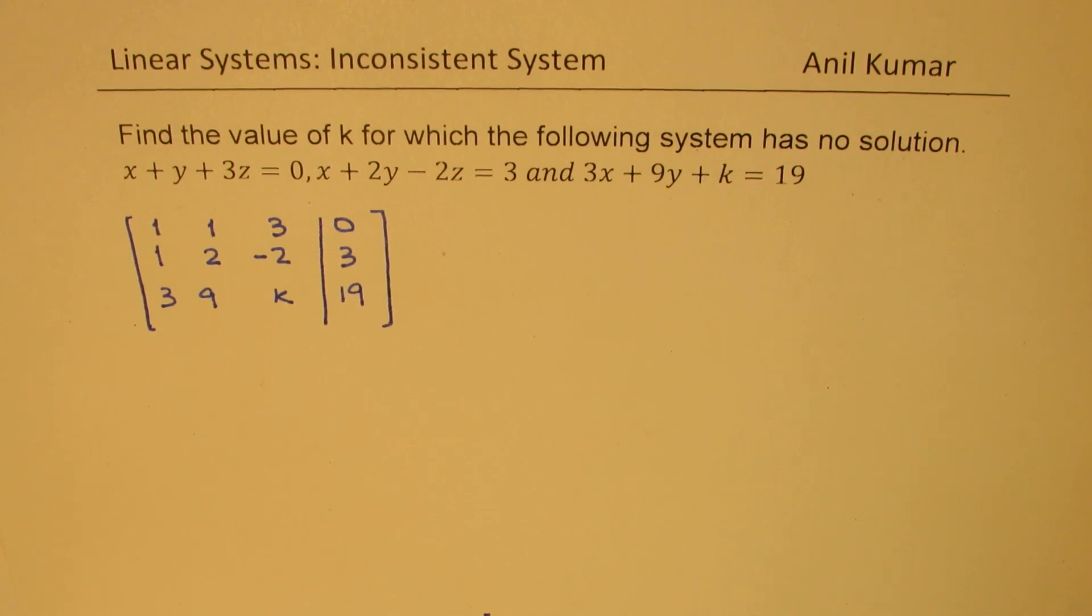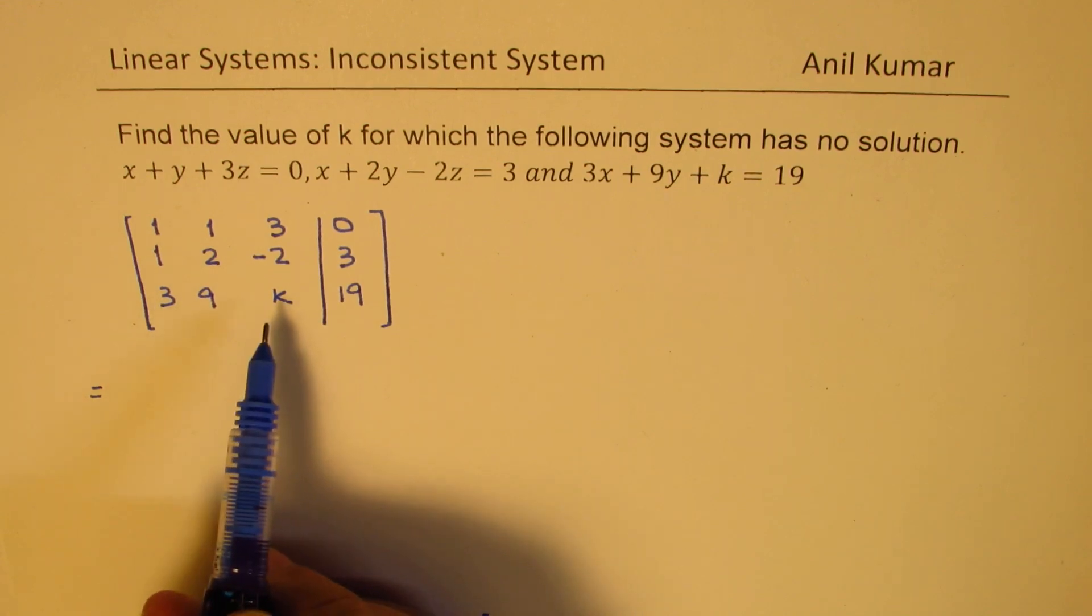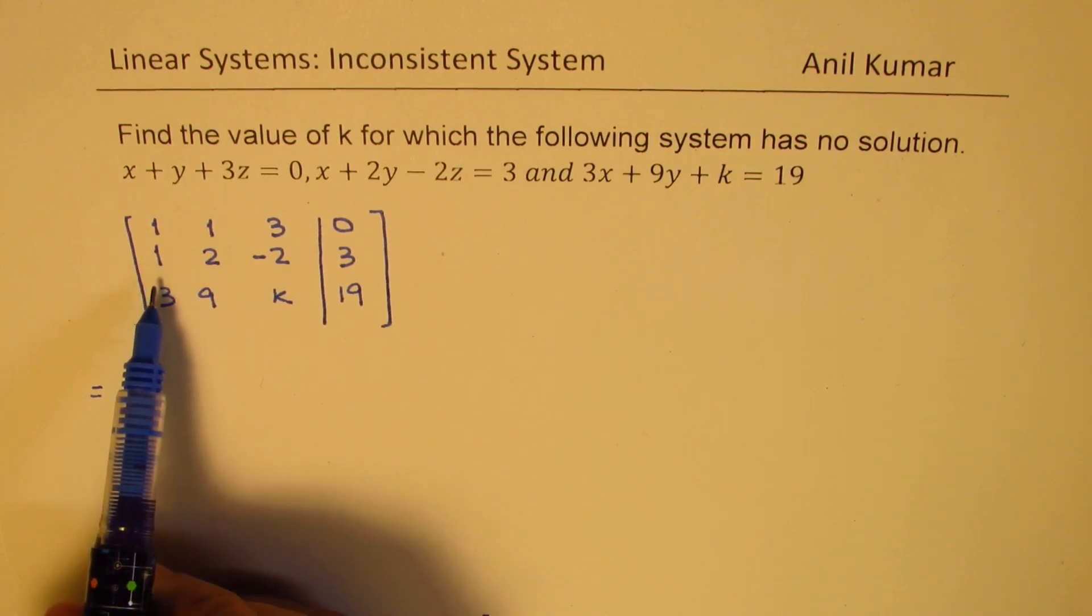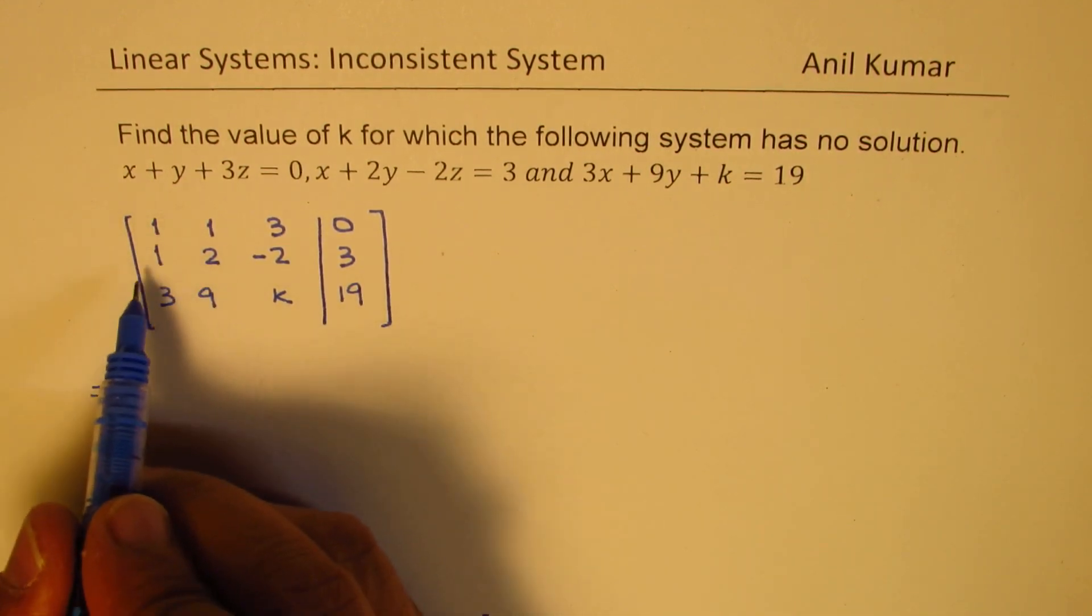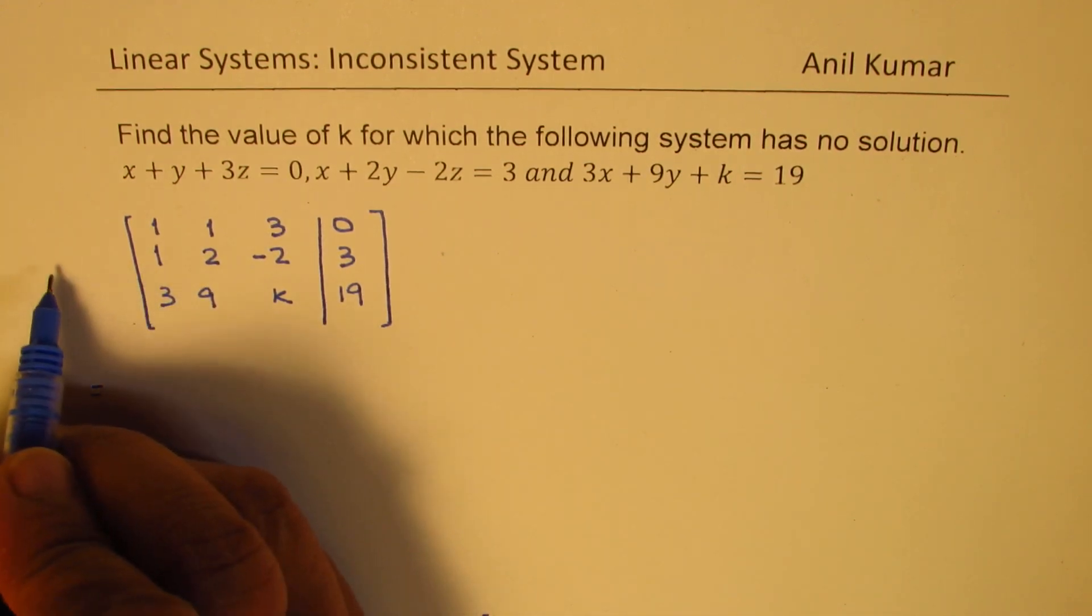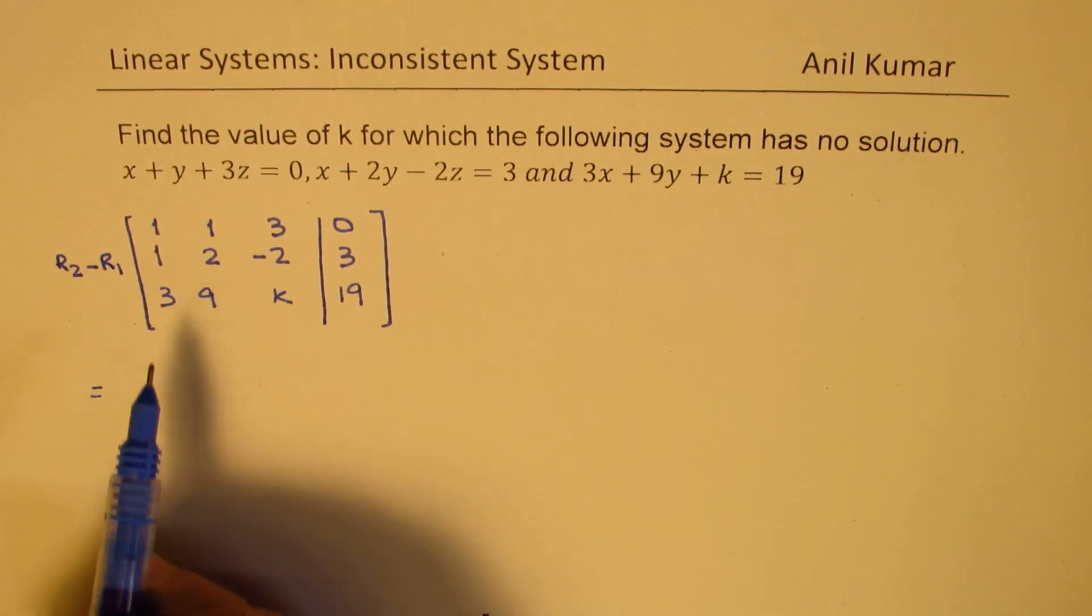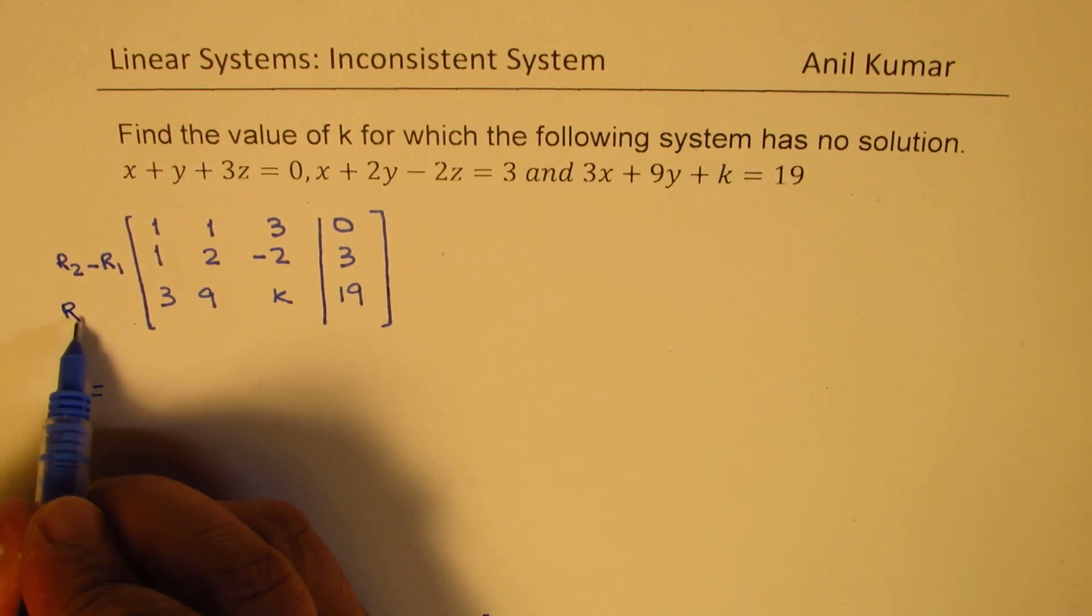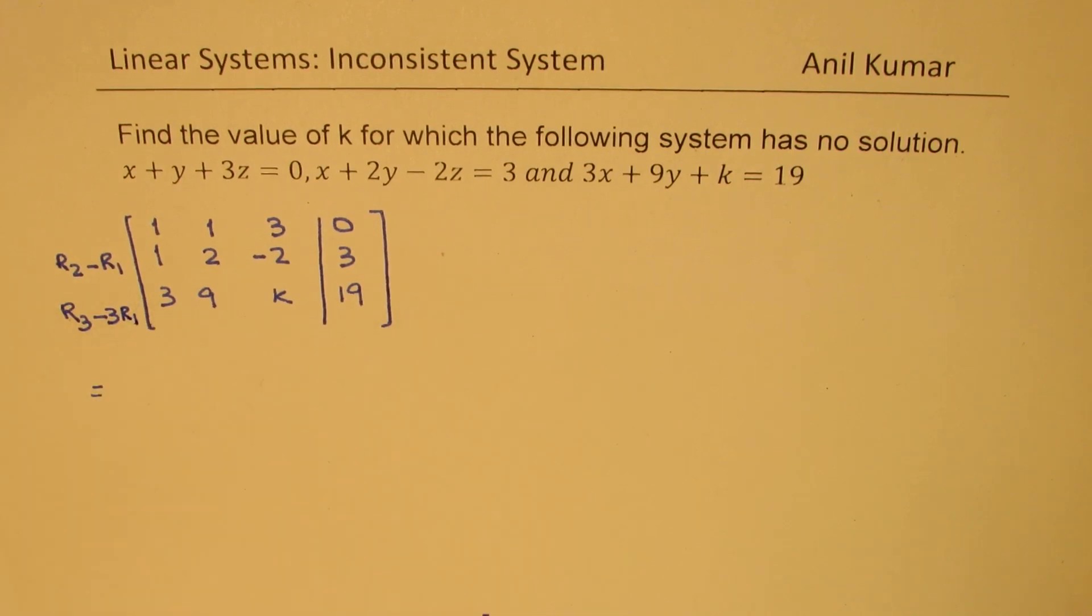Now the best way to do this is to reduce this using rows and columns. So what we will do to make this first step is to make these two 0. To make this 0 I can do row 2 minus row 1. To make this 0 I can say it is r3 minus 3 times r1, so that's what we are going to do.